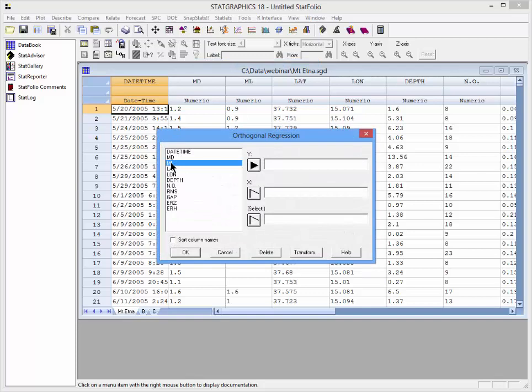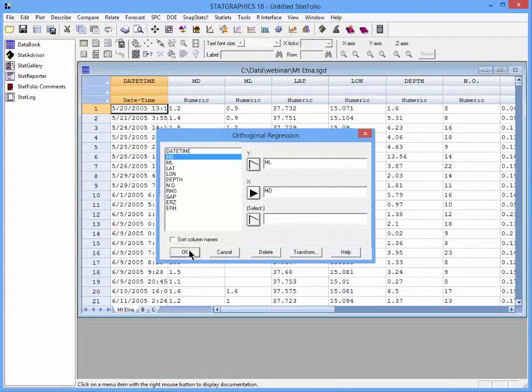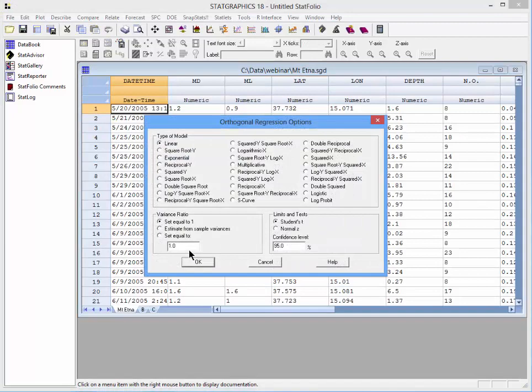The dependent variable Y is ML. The X variable is MD. I'll then press OK. This will display the analysis options dialog box.